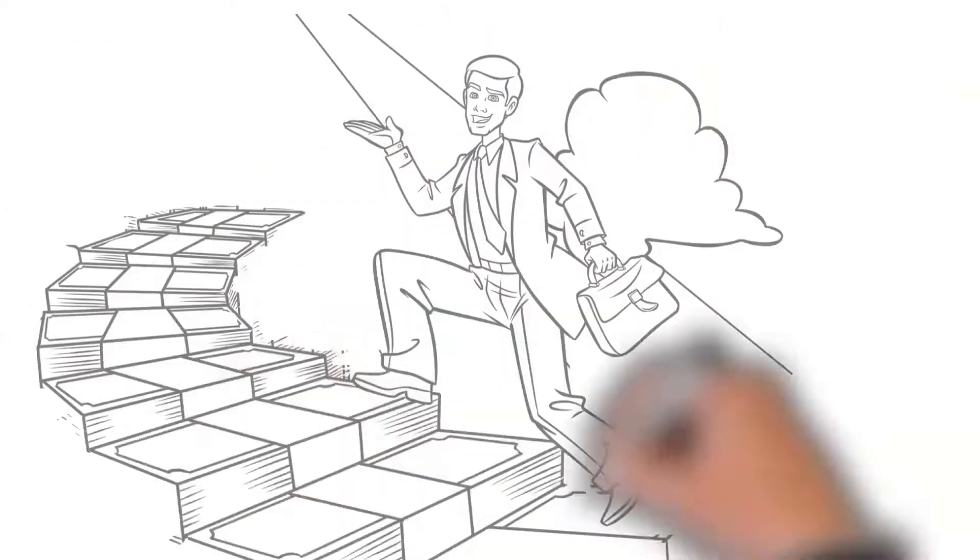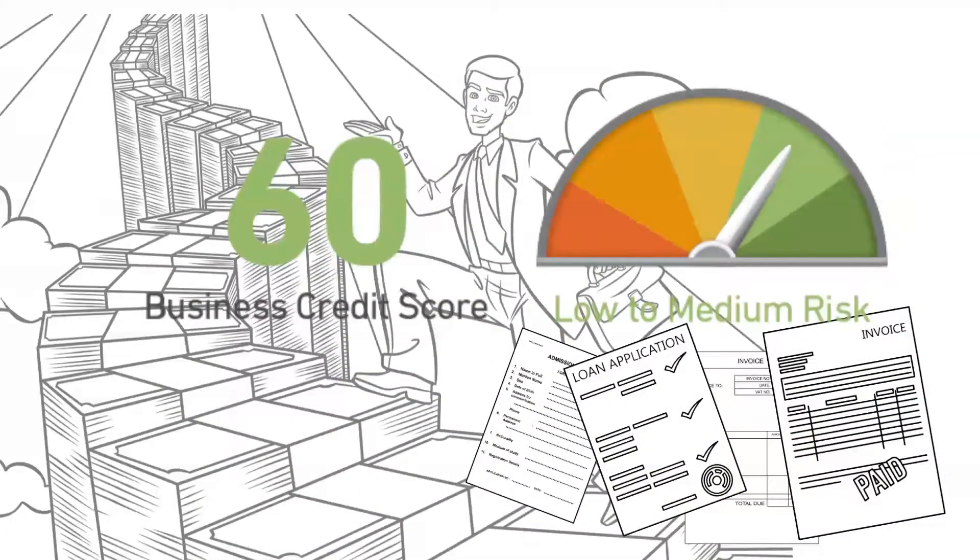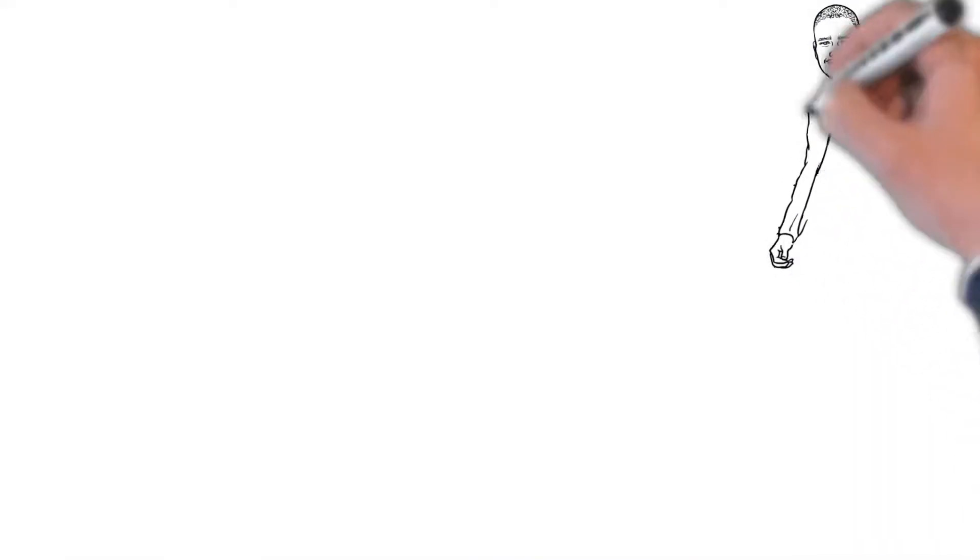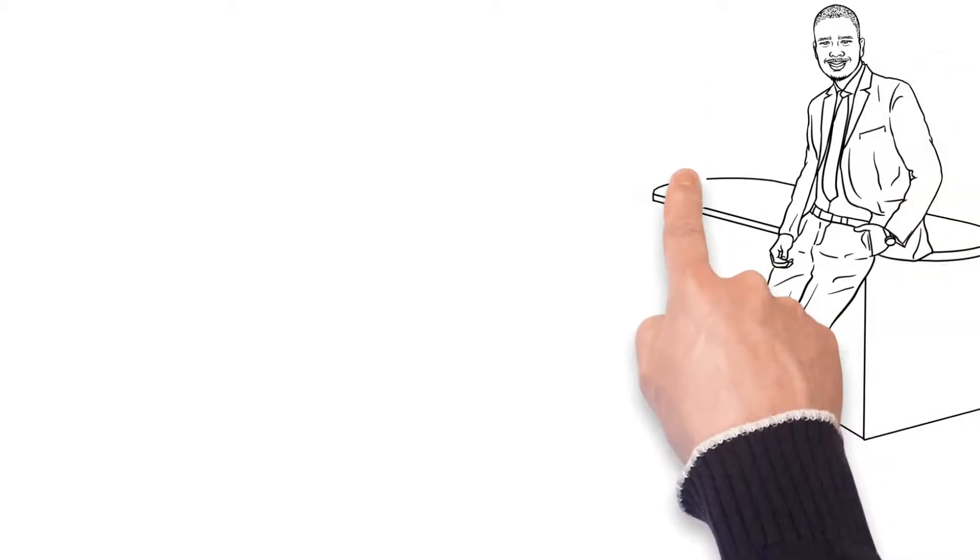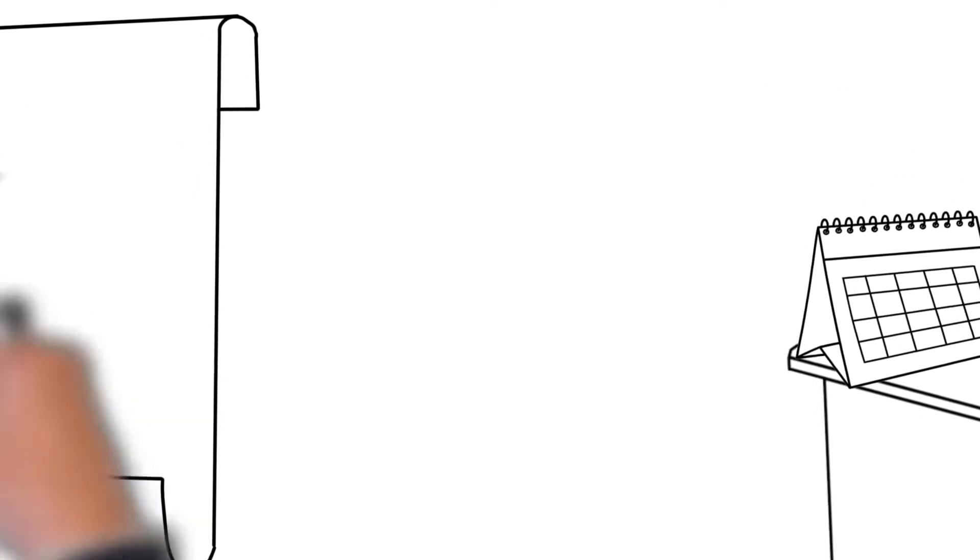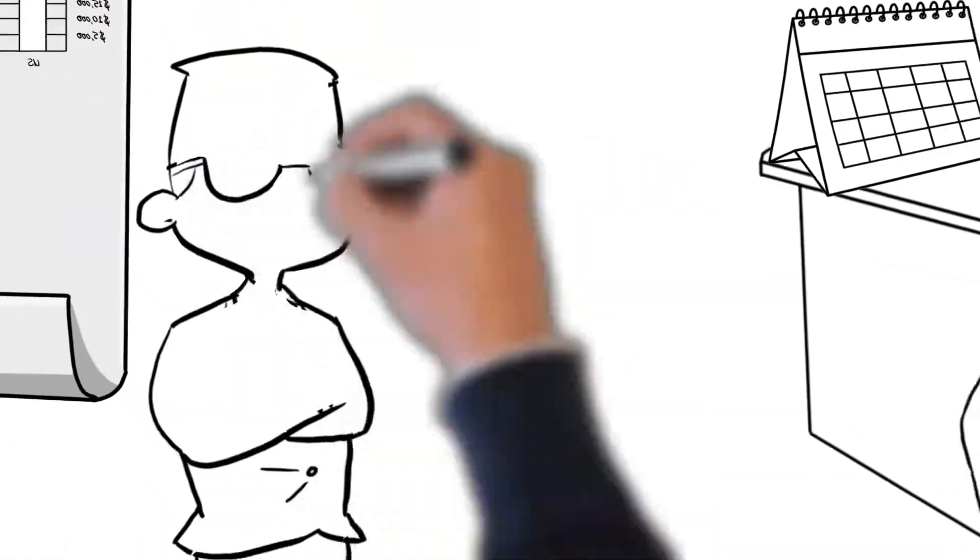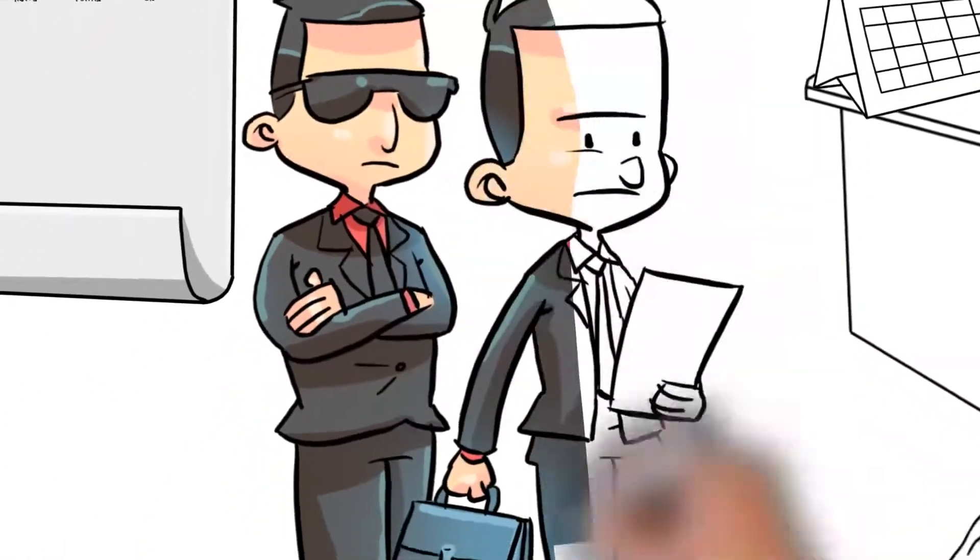A business credit score will demonstrate how you've paid your credit obligations and if you are a good credit risk. A business credit report contains important information about your company such as how long you've been in business, who the principals are, revenues, business type, size and location, and any legal filings such as tax liens, judgments, or bankruptcies.